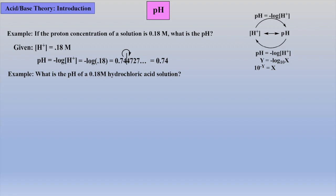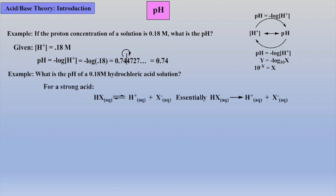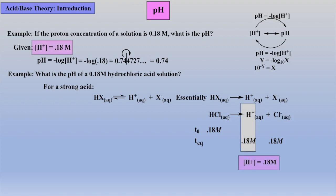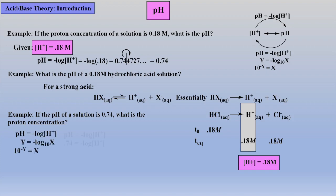It should be noted that this problem could have been worded differently, but still solved in the same manner. For example, the wording could have been: what is the pH of a 0.18 molar hydrochloric acid solution? Well, because hydrochloric acid is a strong acid, it will be completely dissociated. Thus, the proton concentration will be 0.18 molar, which allows the same problem-solving strategy. Alternatively, we could have been given the pH of a solution, pH 0.74, and asked what is the proton concentration. Well, using our knowledge of log rules, the concentration of protons can be readily calculated as shown here.